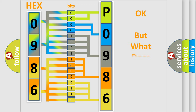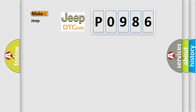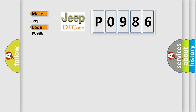The number itself does not make sense to us if we cannot assign information about what it actually expresses. So, what does the diagnostic trouble code P0986 interpret specifically for car manufacturers? The basic definition is: Wake up control.